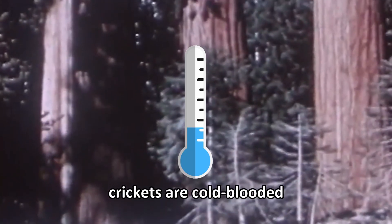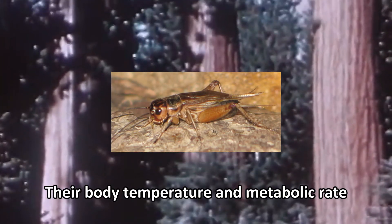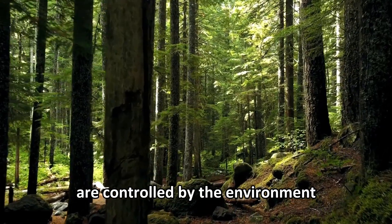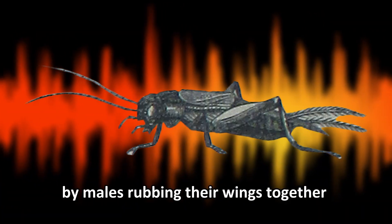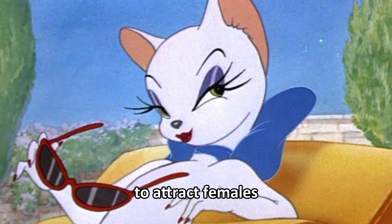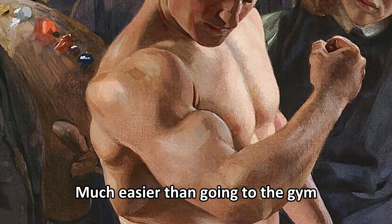Crickets are cold-blooded. Their body temperature and metabolic rate are controlled by the environment. The chirping sound is produced by males rubbing their wings together to attract females, much easier than going to the gym.